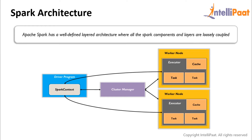Let us dive into Spark architecture. Apache Spark has a well-defined layered architecture where all the Spark components and layers are loosely coupled. Spark uses a master-worker architecture. In the master node you have the driver program, which drives your application. The code you write behaves as a driver program, or if you're using the interactive shell, the shell acts as a driver program. The driver program runs the main function of the application and is the place where the Spark context is created. The Spark driver contains various components like DAG scheduler, task scheduler, backend scheduler, and block manager, which are responsible for translating Spark user code into actual Spark jobs executed on the cluster.